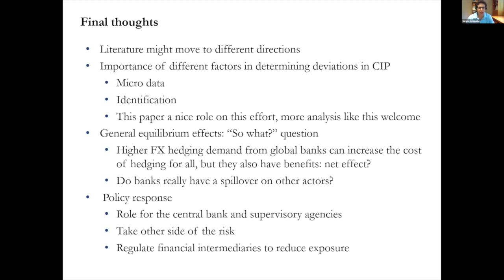There is also the question of general equilibrium effects. We have these deviations from CIP — who cares? Georgia's point is that banks are putting pressure and dislocating the market such that other actors, like corporates wanting to hedge, are affected. But banks also play useful roles, so the counterfactual matters. We also don't know the extent of spillovers to other sectors. Understanding the general equilibrium effects is beyond this paper's scope but is where part of the literature might go.